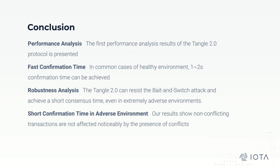In conclusion, this paper gives the first performance analysis results of the Tangle 2.0 protocol. Based on experimental results, 1 to 2 seconds confirmation time can be achieved in most cases when there are no conflicts. Under the bait-and-switch attack, even when the adversary node occupies up to 33% of total weight, our protocol can still achieve a short consensus time within a few seconds. In addition, the confirmation time of most non-conflicting blocks is not affected even when there are conflicts and adversary nodes. Thank you for listening.